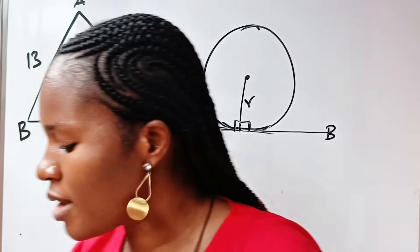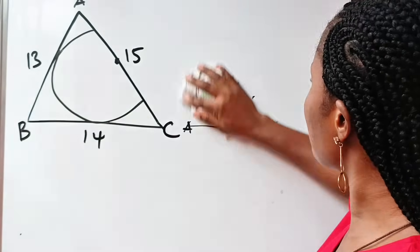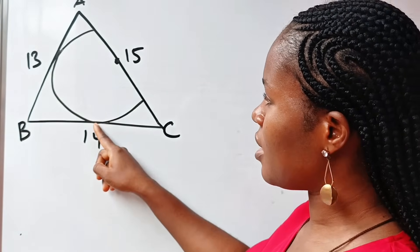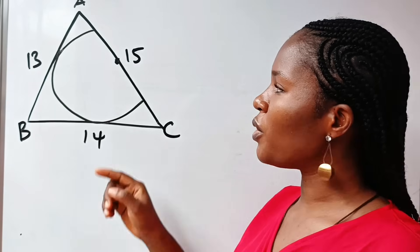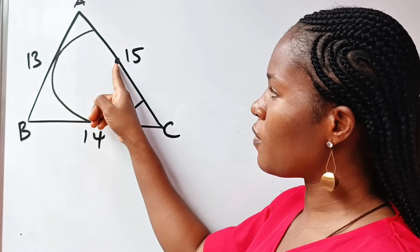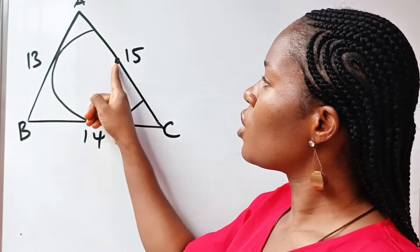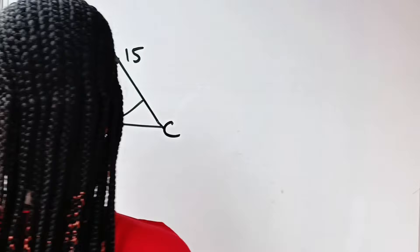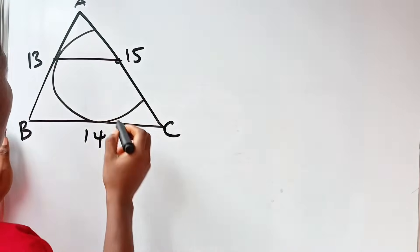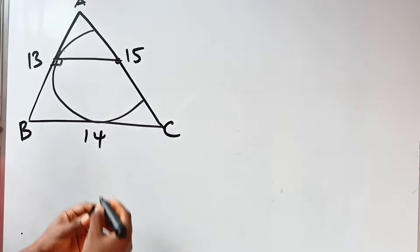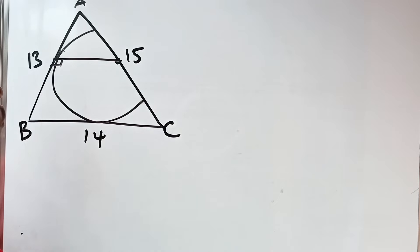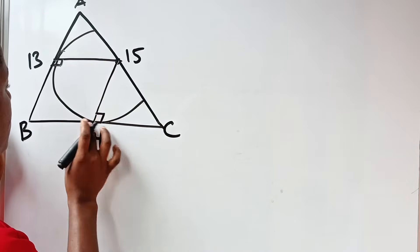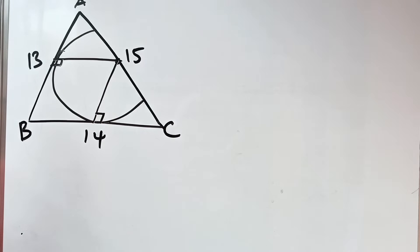Now applying this to our drawing — we have a tangent here and another tangent here. If we draw a straight line from the center of the circle to the point of contact, we form 90 degrees. So we have 90 degrees here and 90 degrees here as well. Similarly, drawing from the center to the other tangent also forms 90 degrees.